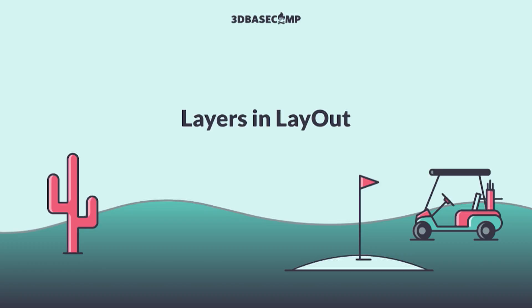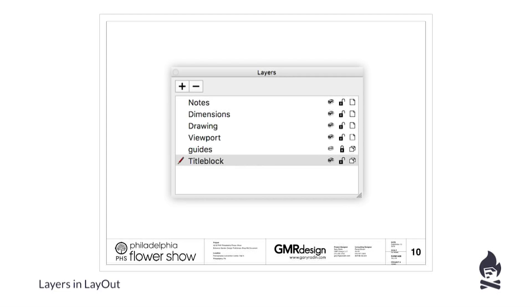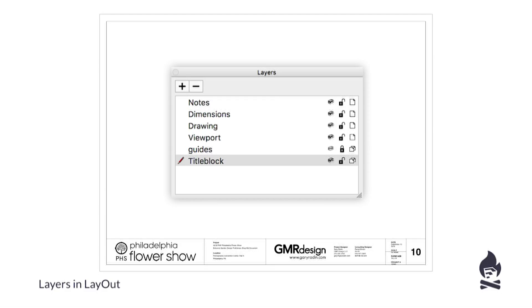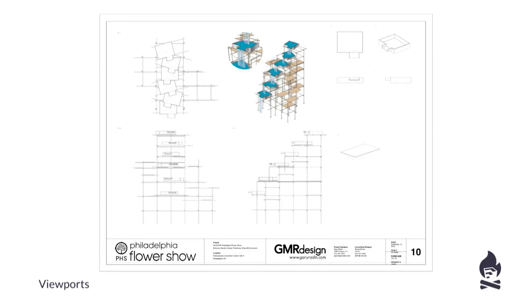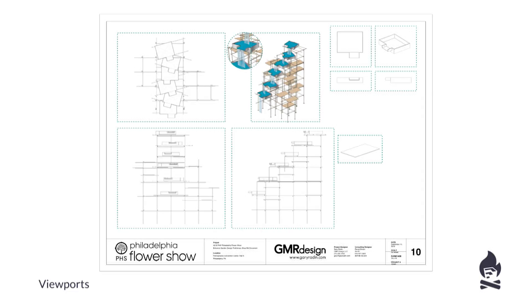For Layout layers I try not to use many, but generally I'll have a title block layer, a guide/grid layer, a viewport layer for all SketchUp viewports, a drawing elements layer, and a separate notes and dimensions layer.